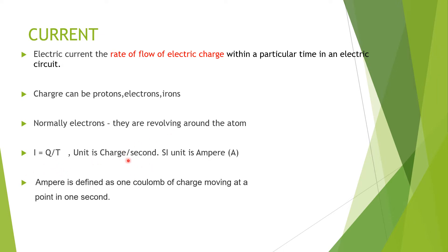Based on this, we can write the formula: I = Q / T, where I is the current in amperes and Q is the charge transferred. The unit of current is charge per second, or in SI units, the ampere. One ampere is defined as one coulomb of charge moving past a point in one second.